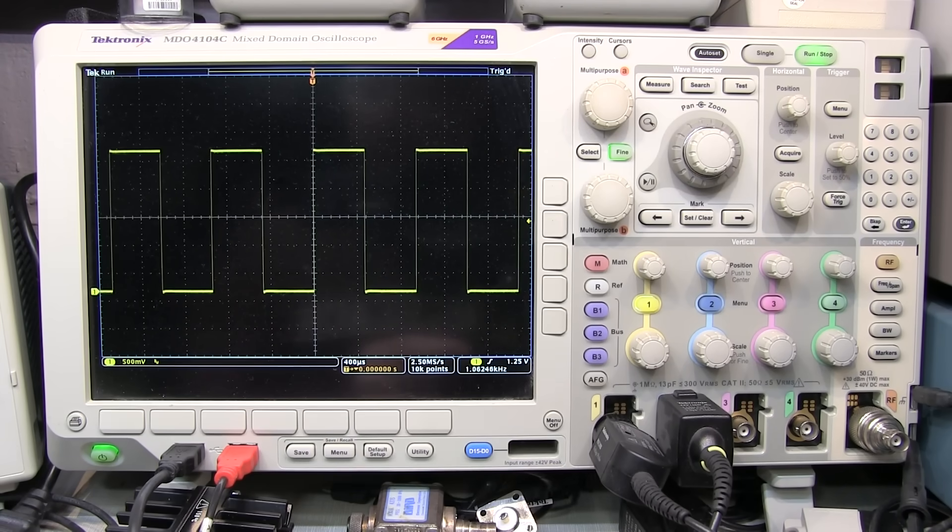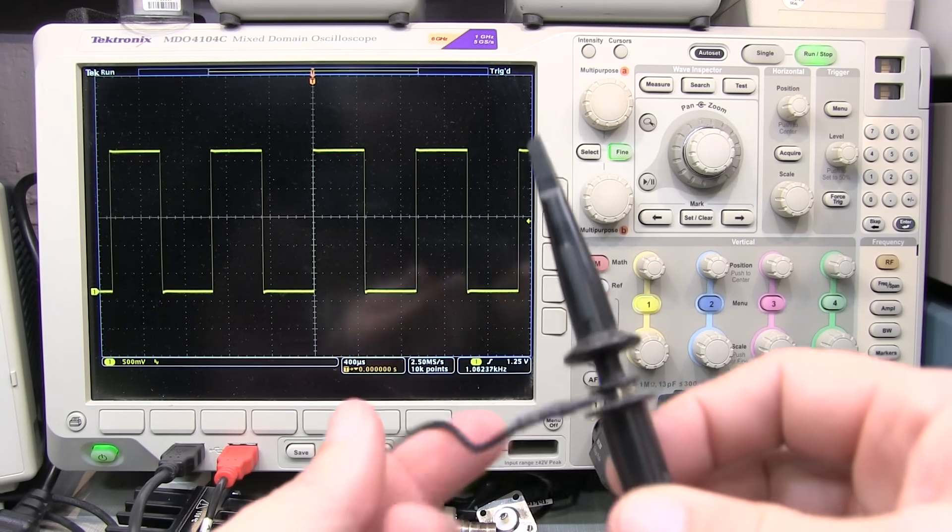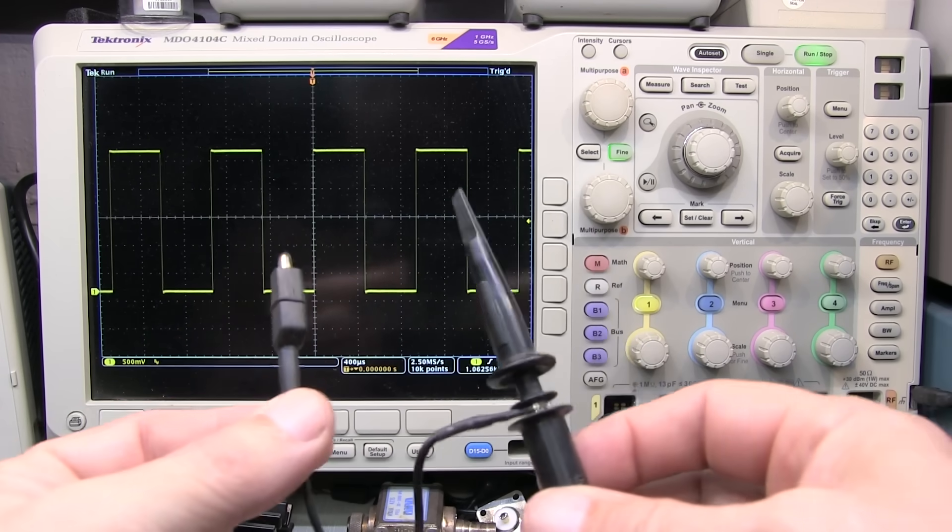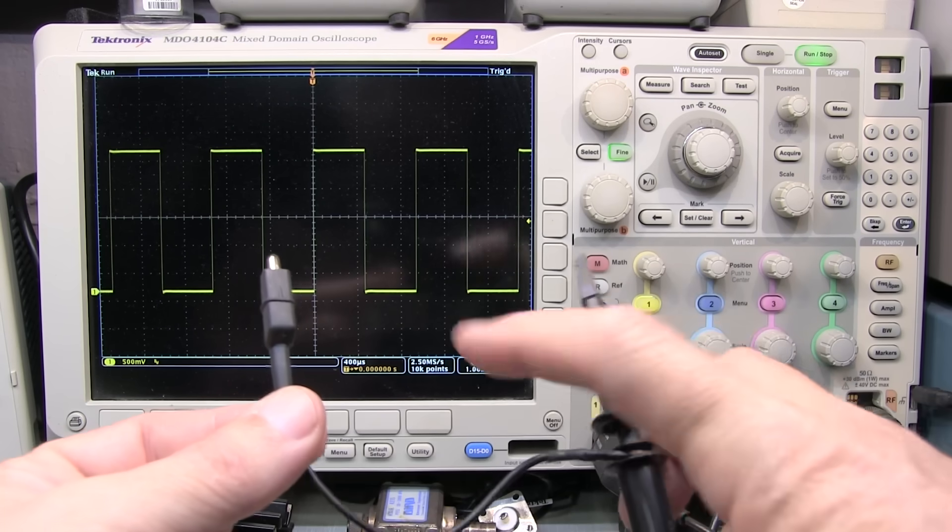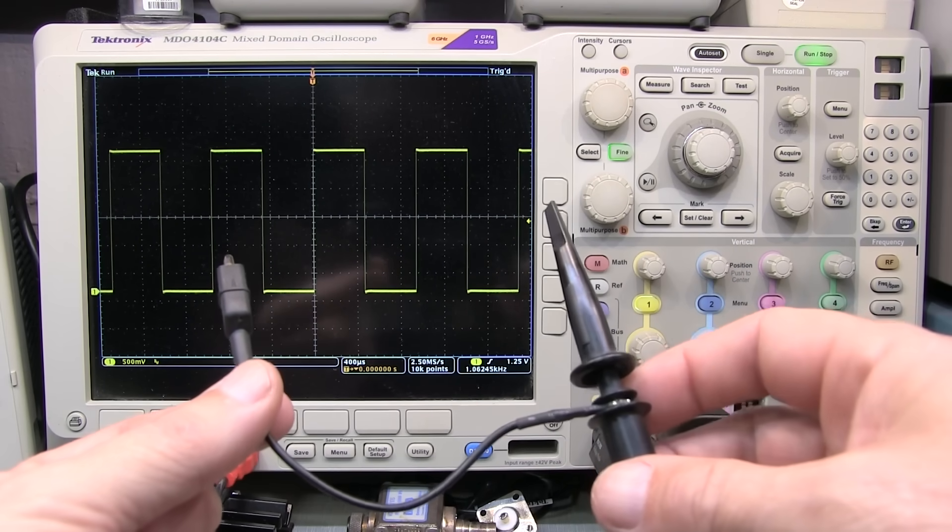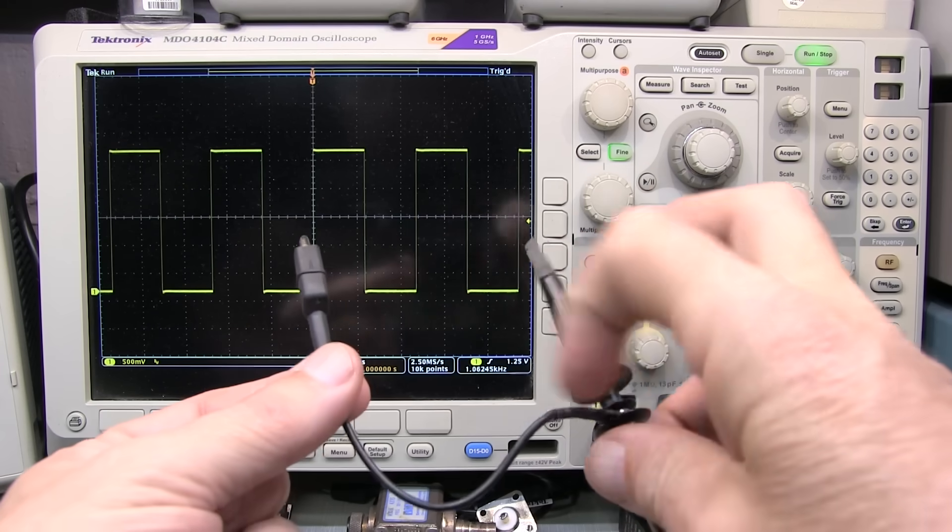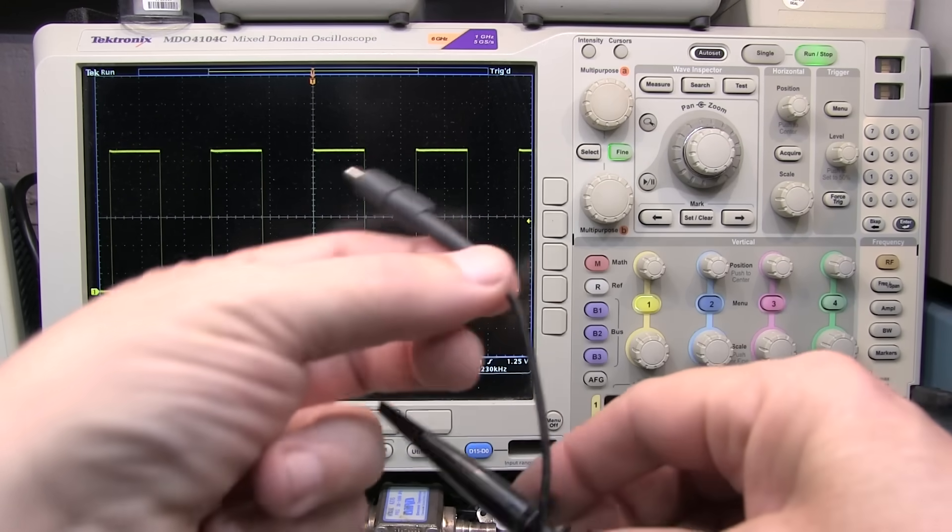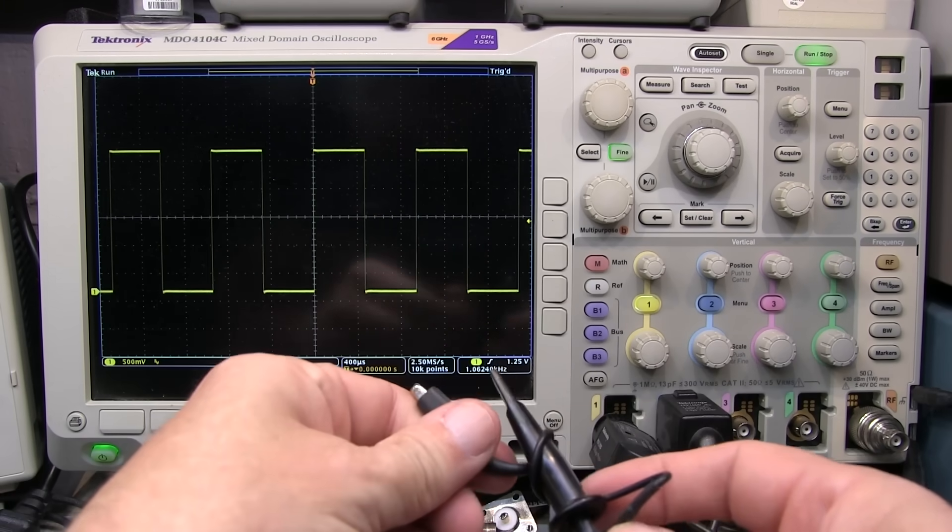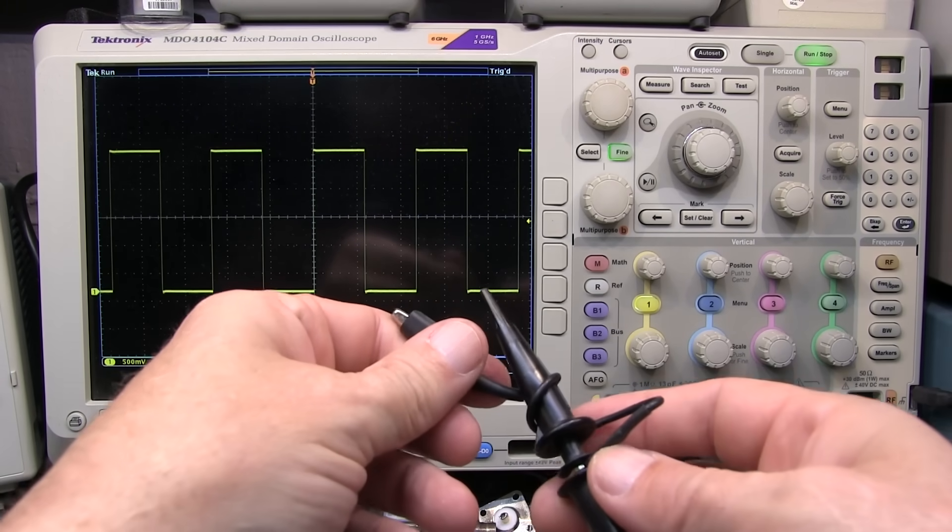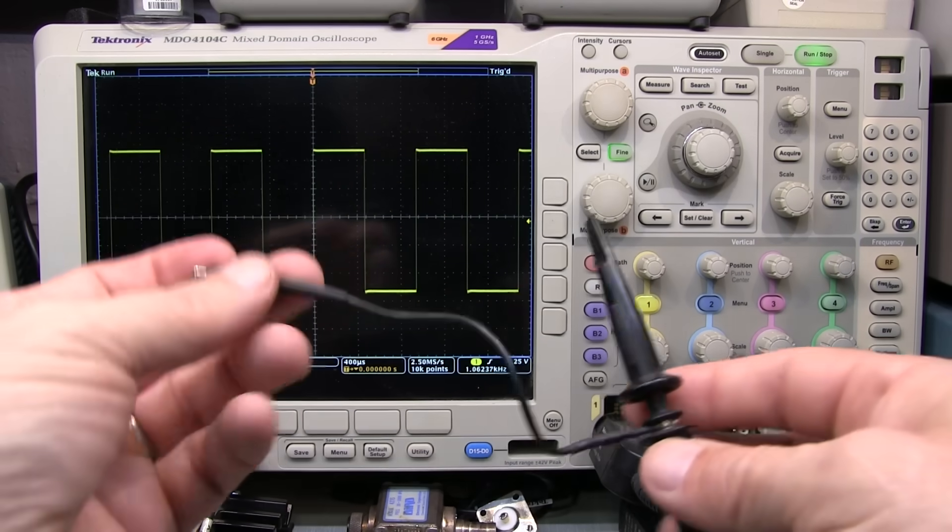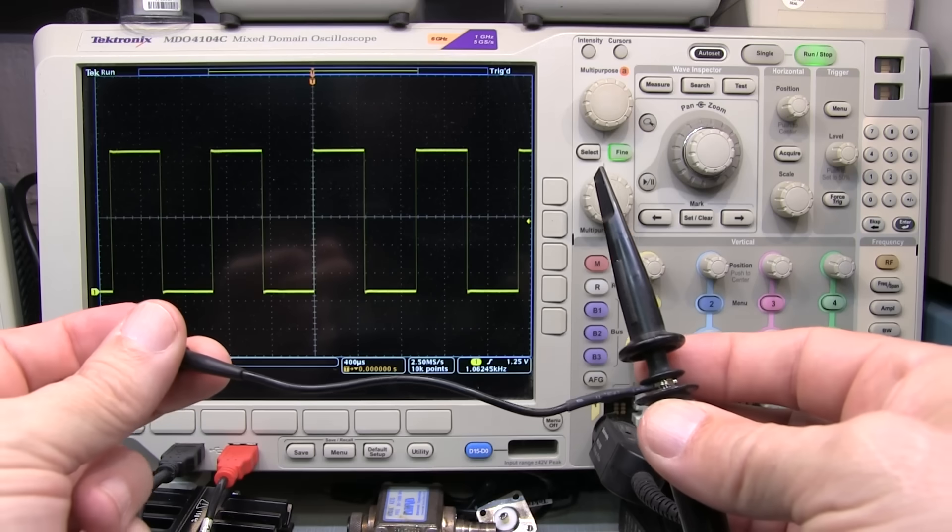Another important consideration when using 10x probes or any of the probes really, is the ground lead length. The longer that ground lead, the more inductance you're going to put into your measurement path, inducing ringing and things like that. The inductance is proportional to this loop area. So sometimes taking that long ground lead and twisting it around your probe to minimize loop area can actually help a little bit. But the best practice when you can get away with it is to not use these longer ground leads, particularly when measuring higher frequency signals.